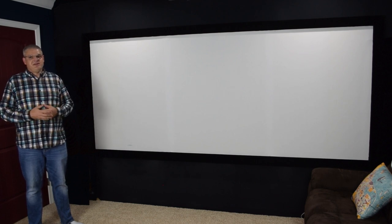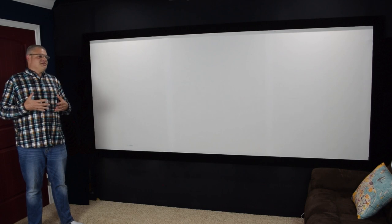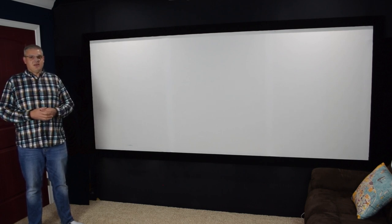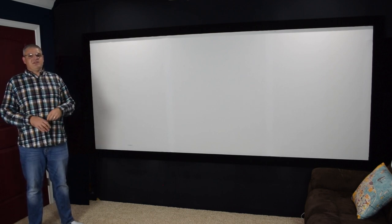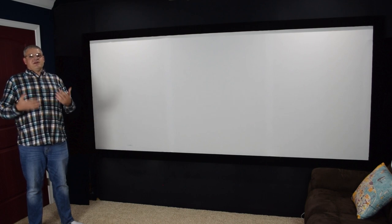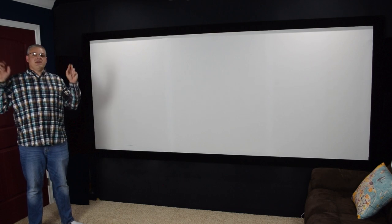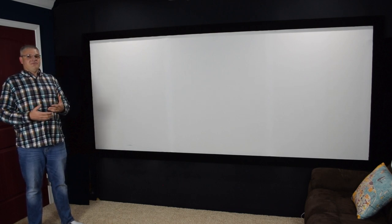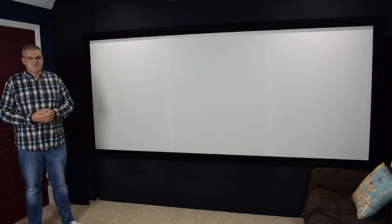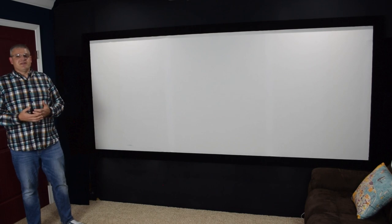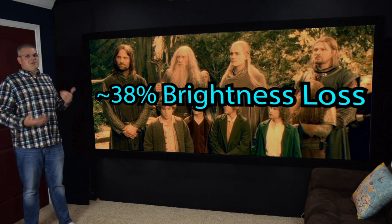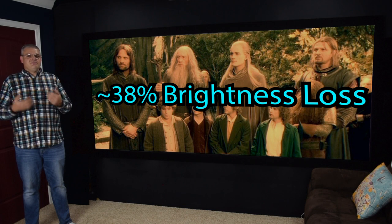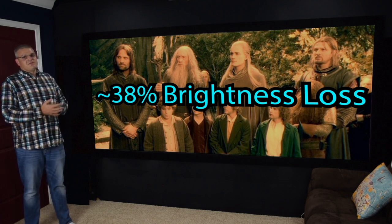The zoom method of doing constant image height isn't the best method per se, but it's definitely the cheapest way. What you will experience with the zoom method is that if you have a 1080p projector and you're zooming it out so the image is bigger, depending on your seating distance, you might start seeing some pixel structure. But as long as you get a 4K projector or even a simulated 4K projector, you can zoom out the image without losing too much detail. One thing you are going to lose is brightness, though if you're not at the extremes of your projector's capabilities, it may not be noticeable.